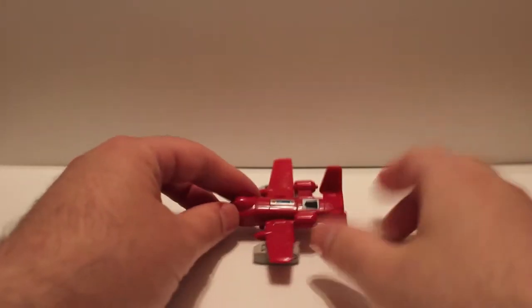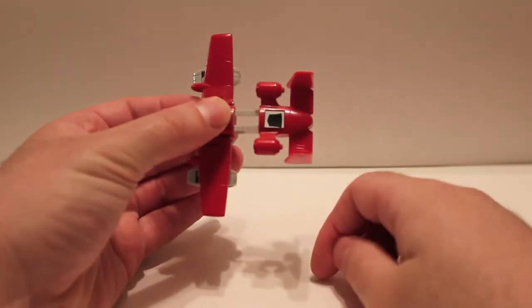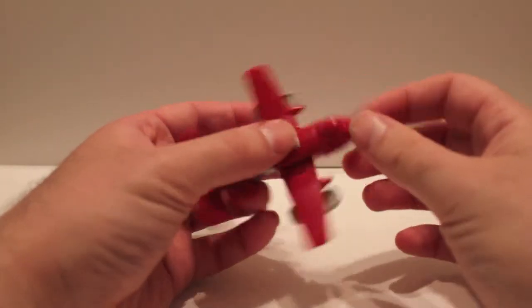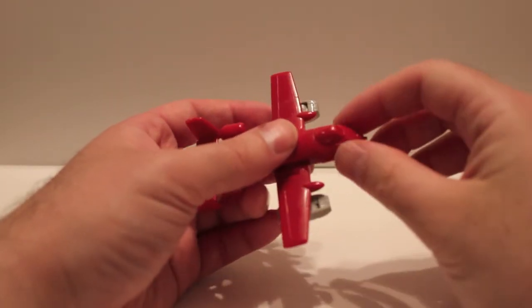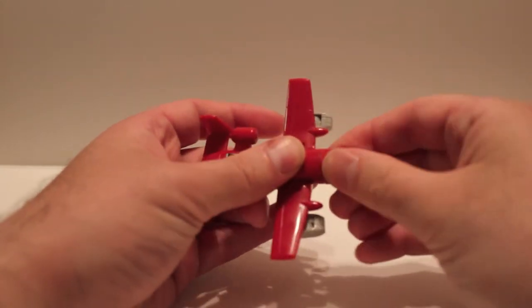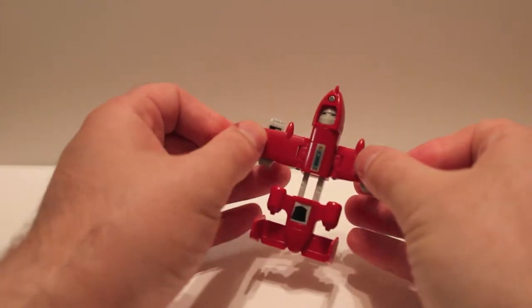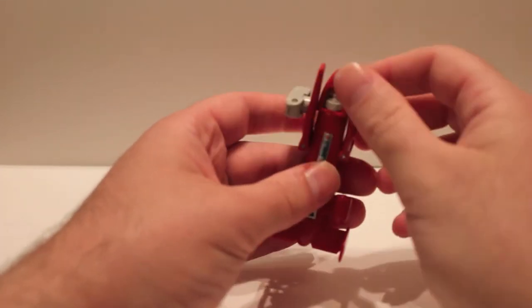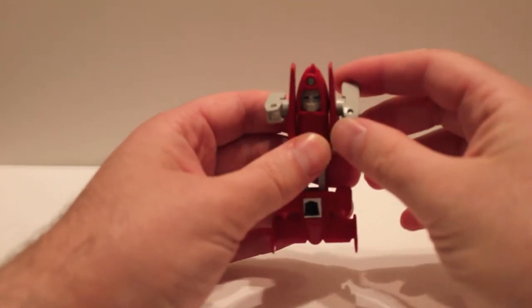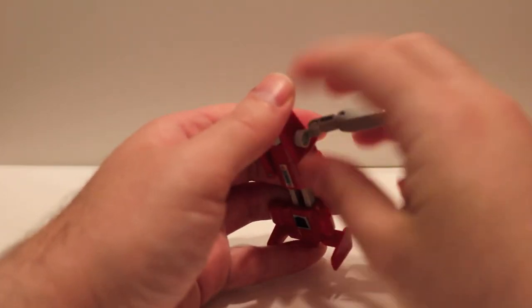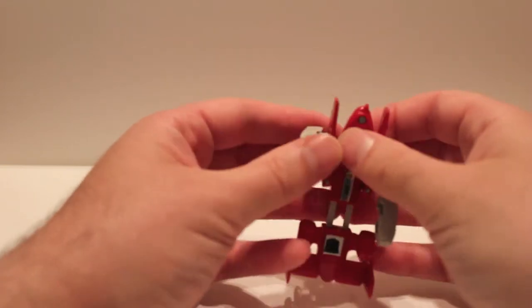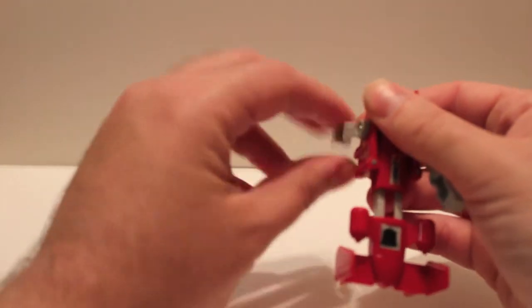You can start by pulling out the legs. Then it's easier to do the head now, so we'll just do the head now - just rotate it, and there's his head. For the wings, you want to fold them up and then rotate them up. The fists are right here and they just kind of extend out. You can swing them around, and there we have G1 Power Glide.